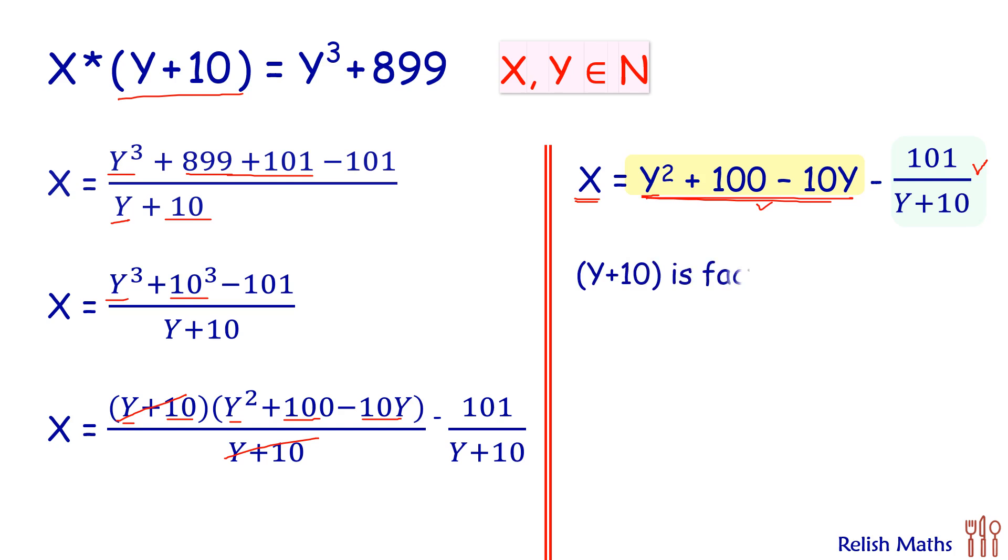Y plus 10 is a factor of 101, but 101 is a prime number. It has only two factors: 1 and 101 itself. So we can say that Y plus 10 is 1 or Y plus 10 is 101.